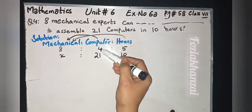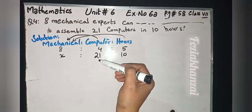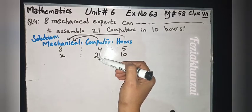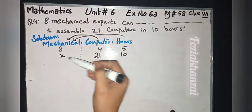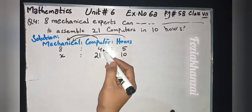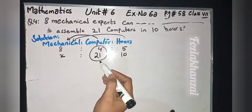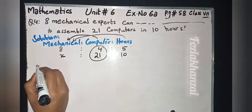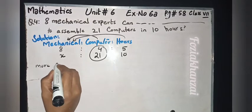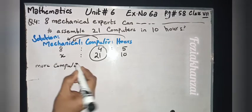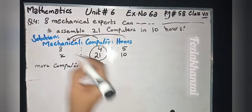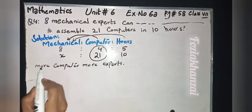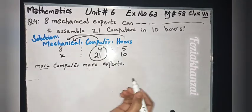First we have 4 computers, then we have 21 computers. More computers means more mechanical experts are required. Comparing just 4 and 21 — more computers, more mechanical experts needed. So we write the statement: more computers, more mechanical experts. This is a direct proportion.